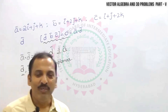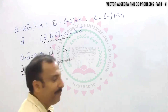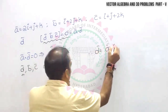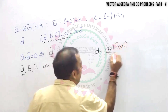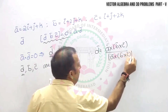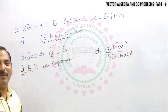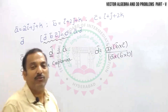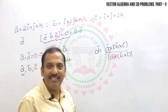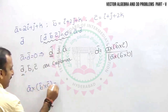Therefore we can write d̅ = a × (b × c) divided by its magnitude, since d̅ is perpendicular to a̅ and coplanar with b̅ and c̅. Now we need to find a × (b × c) using the vector triple product formula: a × (b × c) = (a·c)b̅ − (a·b)c̅.